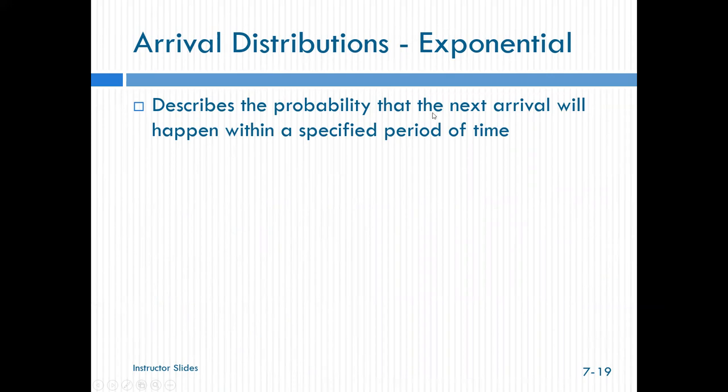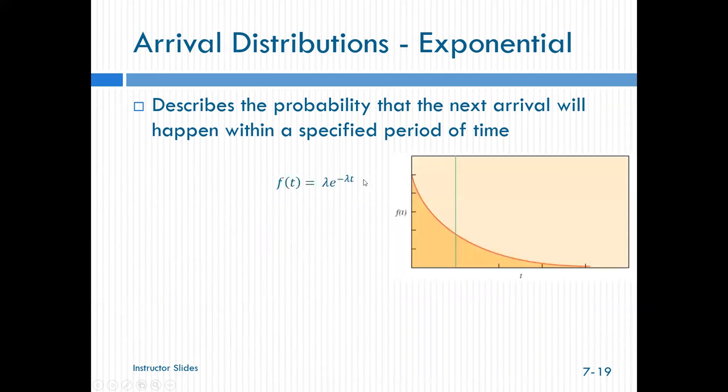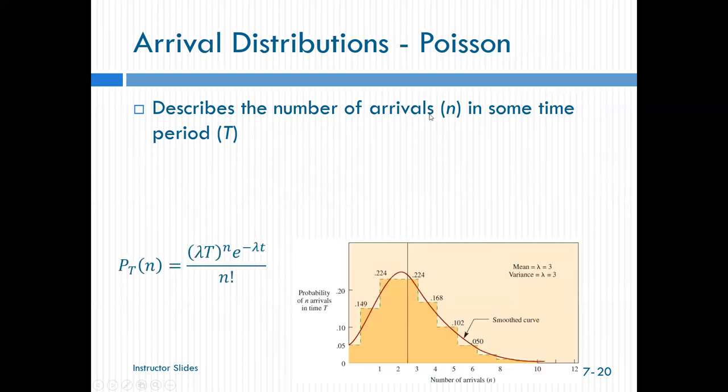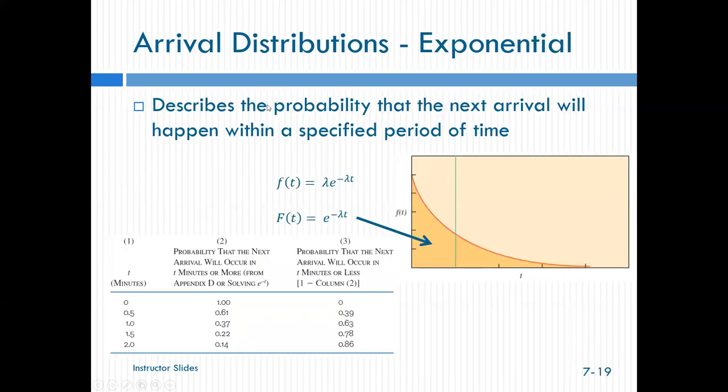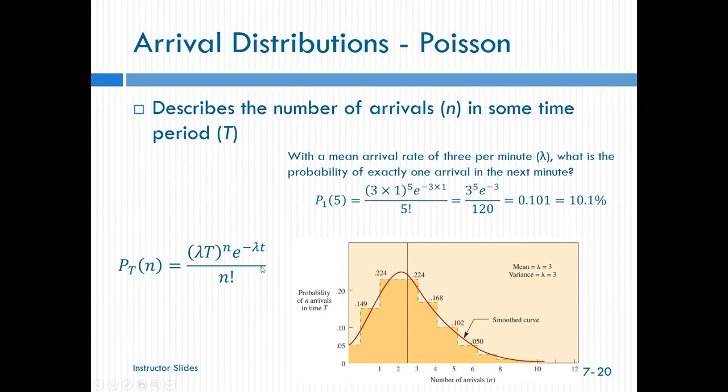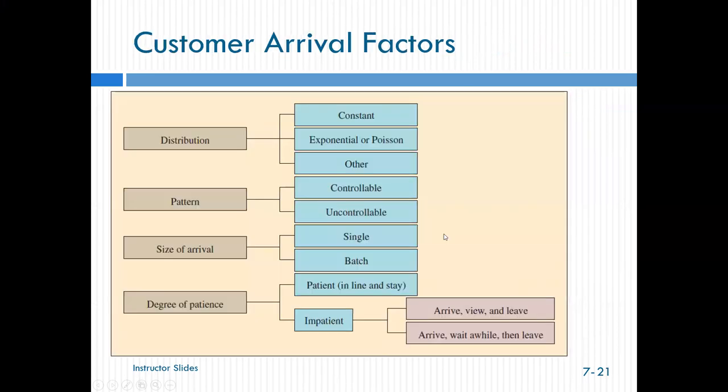Arrival distributions. We have exponential, describes the probability that the next arrival will happen within a specified period of time. This is what I don't want you to get hung up on because I'm not going to ask you to calculate that. Basically, I just want you to understand that there are differences between the types of arrival distributions that we're going to be talking about. And we need to be aware of that to make sure we're using the correct formulas. We can have a Poisson distribution, which describes the number of arrivals during a period of time. So let's compare that again real quick. Exponential is describing the time between occurrences of successive events because time flows continuously. So it's the time between services. Poisson, on the other hand, is the number of occurrences that we are looking at in a fixed period of time. And again, we're not going to get super hung up on this because we're not going to have you dive deep into this type of math.